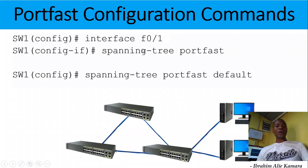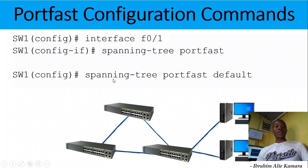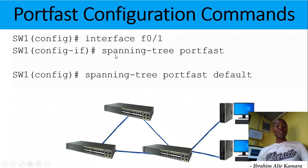We can configure spanning tree portfast in two ways: within the interface, or globally. In global configuration mode you use the command 'spanning-tree portfast default'. When you implement this command it will enable portfast on all interfaces within that particular switch. But if you use 'spanning-tree portfast' only on a specific interface, only that interface — for example f0/1 — will have portfast enabled. You need to know the difference between global configuration and interface mode.